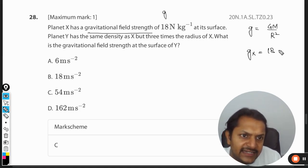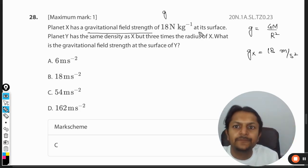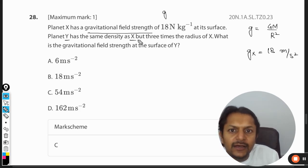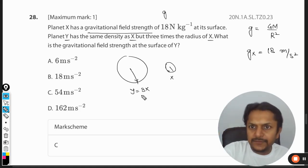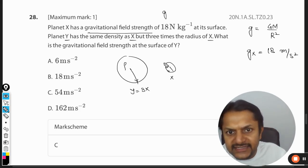This is given as 18 newton per kg or meter per second squared, one in the same thing. Now the planet Y has the same density but has three times the radius of X. I will just draw: this is Y and this is X. So X is smaller; the radius of Y is three times that of X, but the density remains the same.